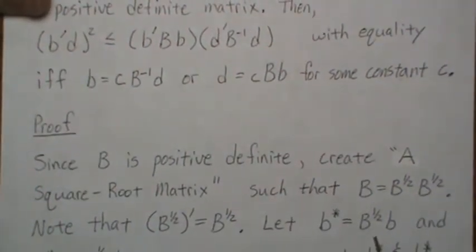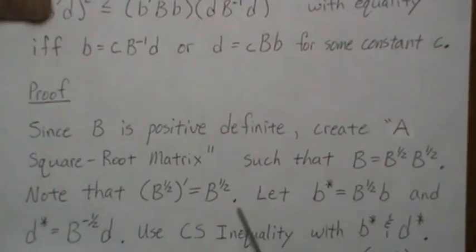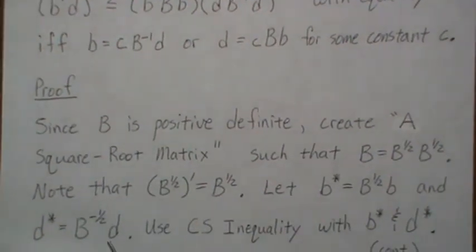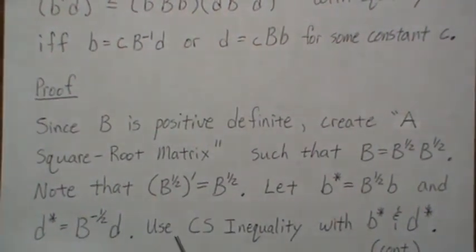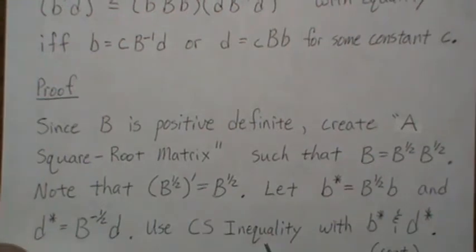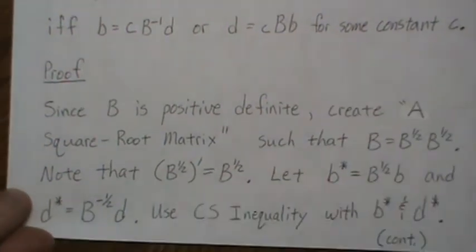So now note that the square root matrix is symmetric. Now, if we let B star be B to the 1 half B and D star be B inverse to the 1 half D, then we use the Cauchy-Schwarz inequality with these two vectors, B star and D star.